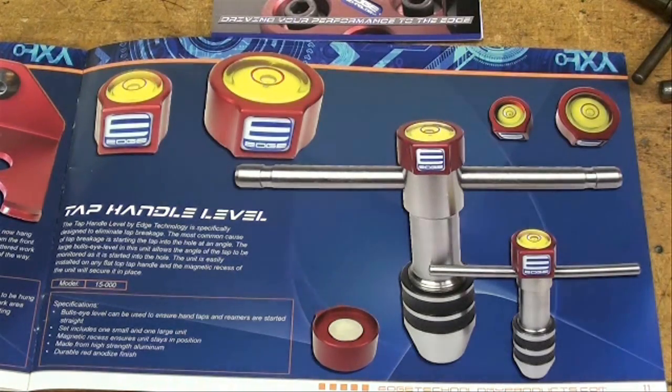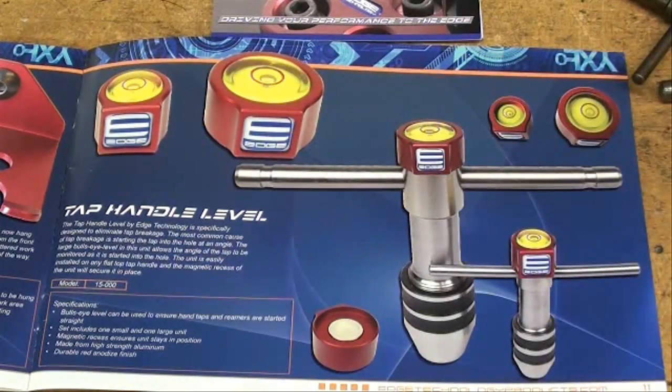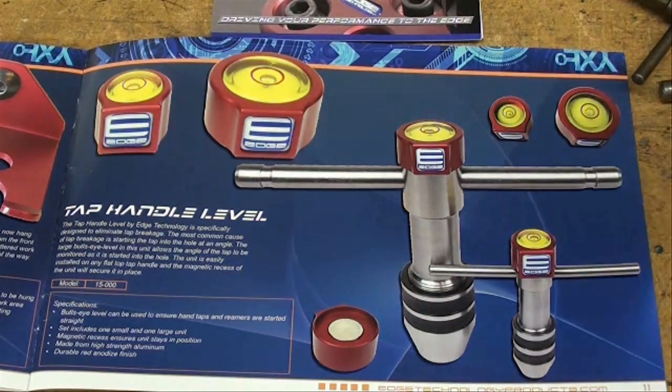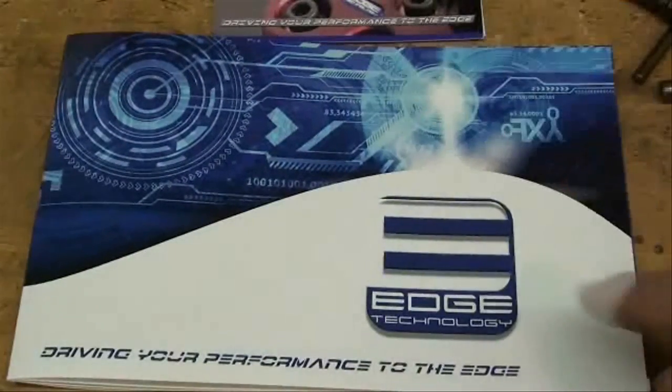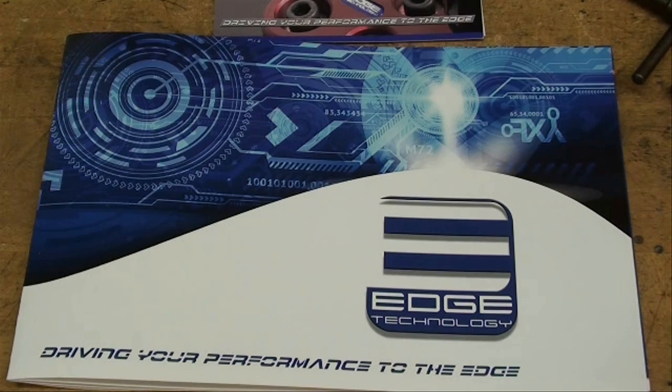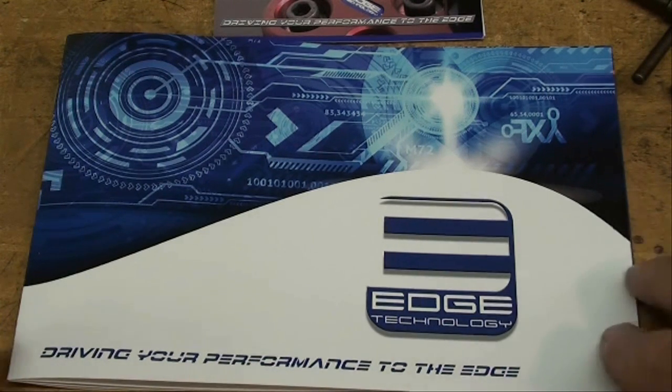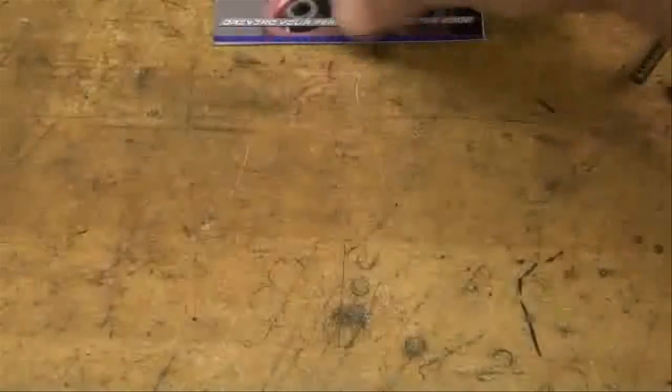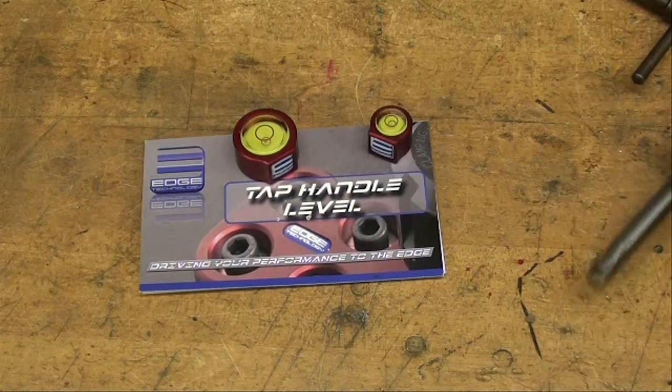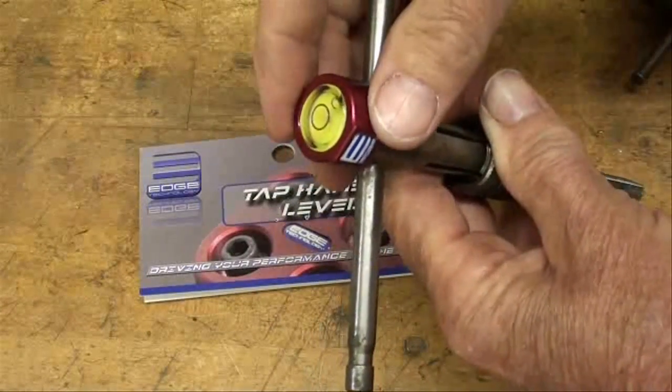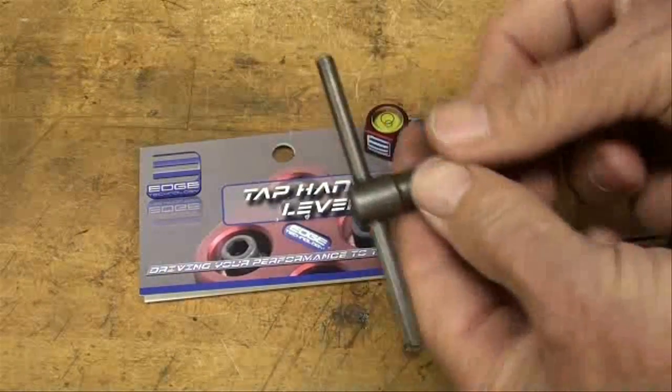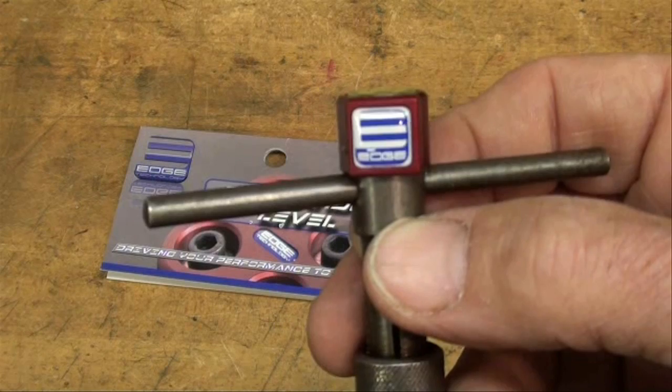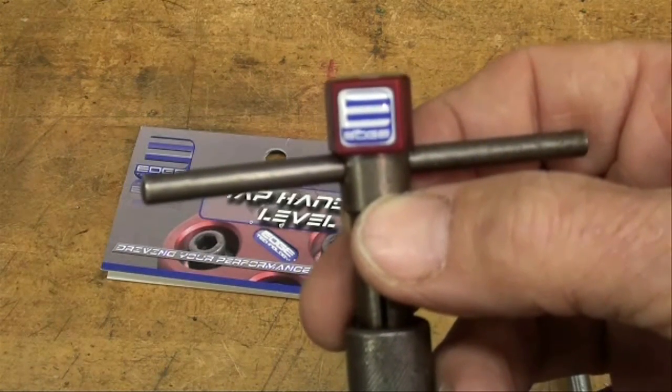The next method I wanted to show you was the tap handle level. And these are little bullseye levels that attach by a magnet onto your tap wrenches. And they come two in a set, two different sizes. And these are made by a firm called Edge Technology. And they've got a little catalog here with a bunch of neat machine shop accessories so you can send for that. Or you can look on eBay and they have their products on there. But the website is edgetechnologyproducts.com. And here is the set of bullseye levels. And they attach by a magnet right onto the tap wrench. And there's a smaller one for your smaller wrenches. And they've got the little logo on there.